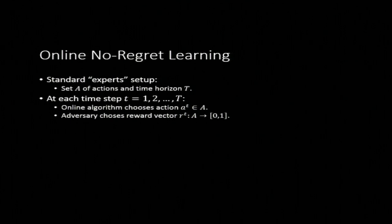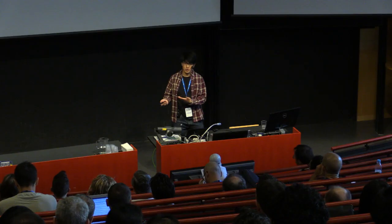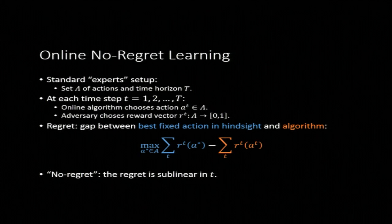And each round, our algorithm gets to choose an action from the action space and our adversary chooses a reward vector which maps possible actions to rewards in zero one. The regret in the name of online no regret learning is the gap between how well our algorithm has been doing over the various rounds compared with the benchmark of, if we knew the adversary sequence up front, what was the best fixed single action we could have taken the entire time? That's just this blue term and then the orange term is what we scored. And we say that an online algorithm is no regret, which means it's pretty good, if its regret term is sub linear in T. So as time goes on, it's doing better and better.